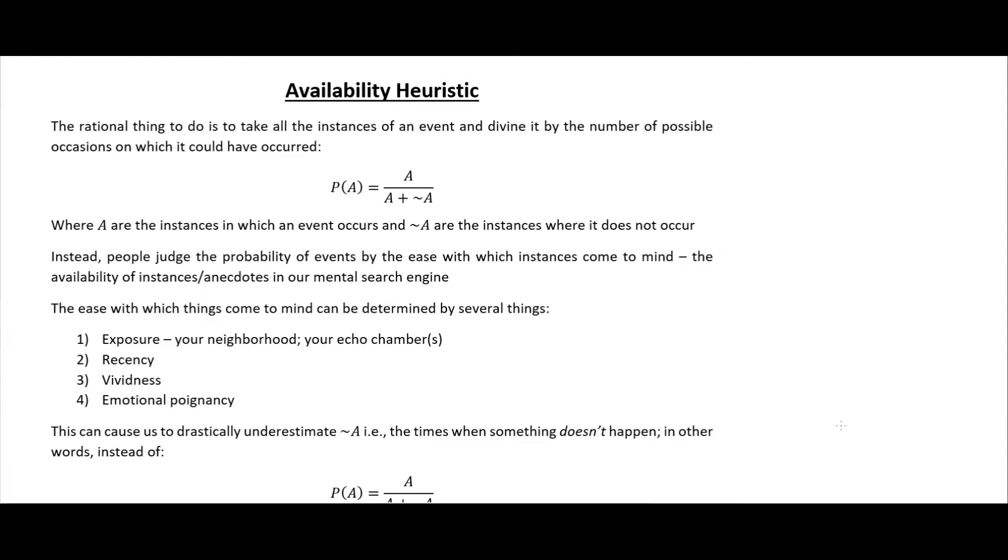In this video I'm going to talk about the availability heuristic, which is somewhat similar to the confirmation bias that a lot of people are familiar with, as the reason that everybody thinks they can dismiss what anyone else says because those people suffer from confirmation bias, but I don't.